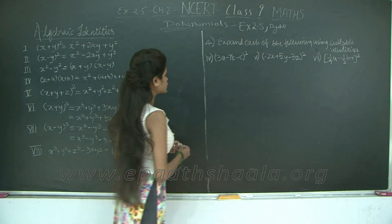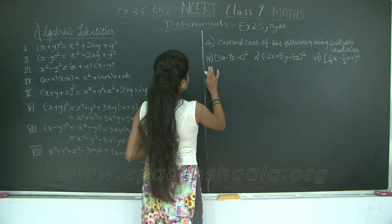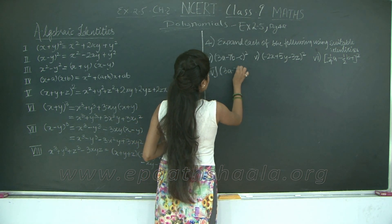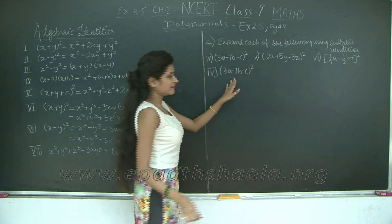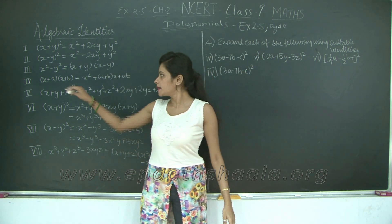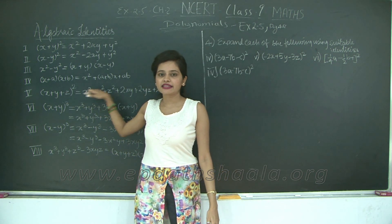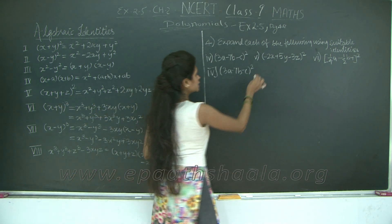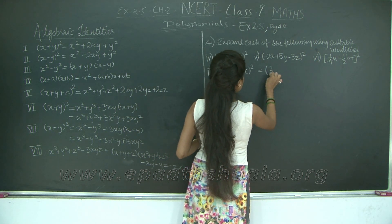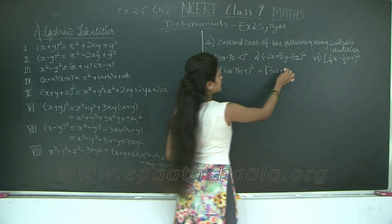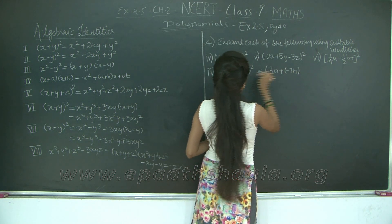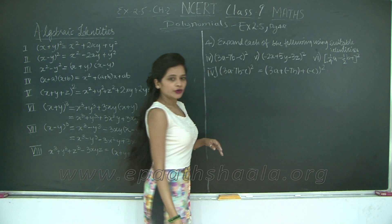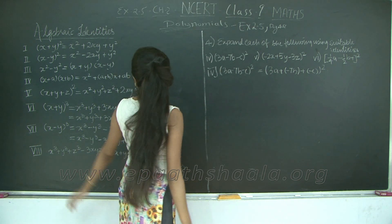Let's take a look at the fourth sub-question which is (3a - 7b - c) the whole square. We have three terms and we have to square it. This is similar to our identity number 5. However, we have positive signs in between, so we need to first convert this into that format. So let's convert it. We can write 3a + (-7b) + (-c) the whole square. So let's use identity number 5 to solve this.